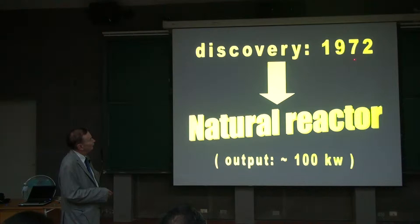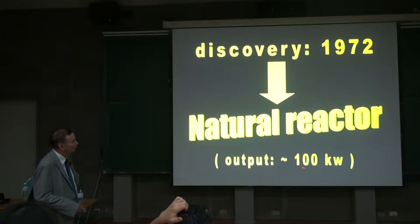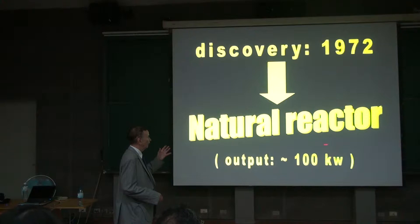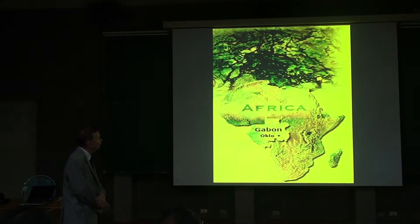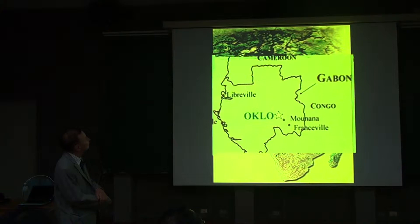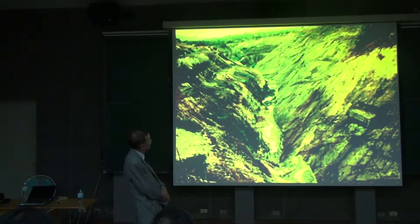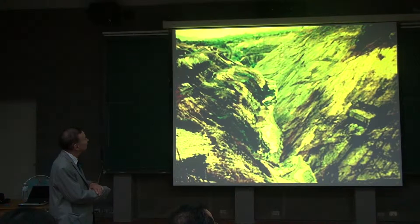This reactor was discovered in 1972 by French nuclear physicists. It was a very small reactor — the energy output was only 100 kilowatts, very, very little — but this output continued for about 100 million years, so the reactor existed for a very long time. Here you see Africa, here is the state of Gabon with Oklo, and here is a bigger picture showing the Oklo river.